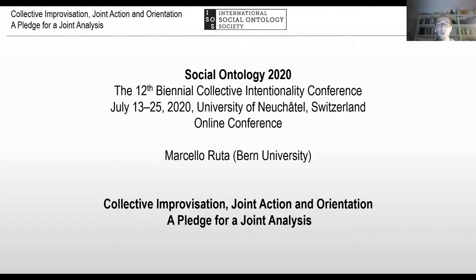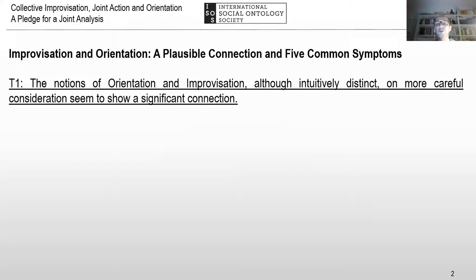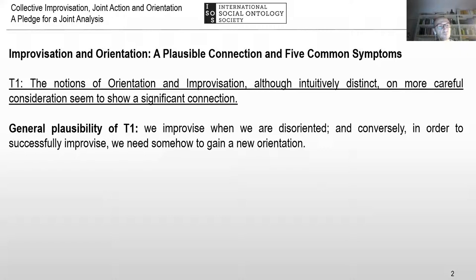Let's start with the first couple: improvisation and orientation — a plausible connection and five common symptoms. First thesis: the notions of orientation and improvisation, although intuitively distinct, on more careful consideration seem to show a similar connection to the general possibility of this thesis — to improvise when we are disoriented, and conversely, in order to successfully improvise, we need somehow to get a new orientation.